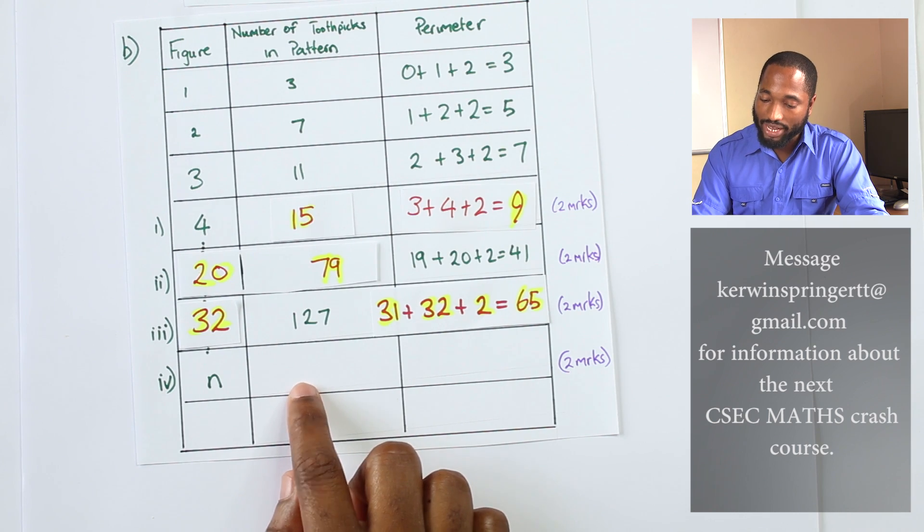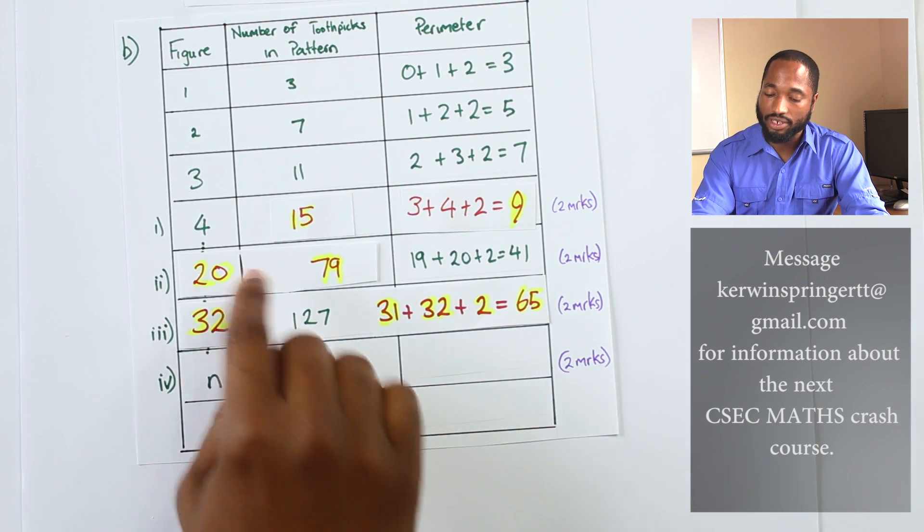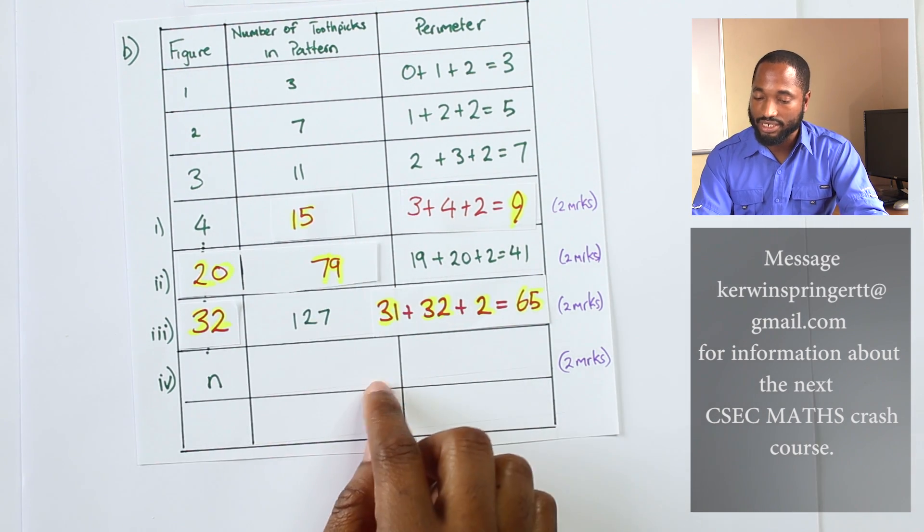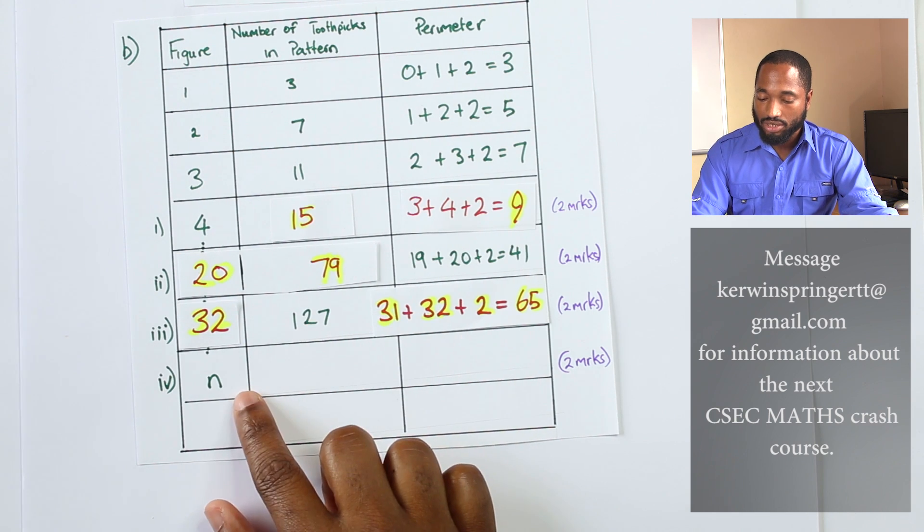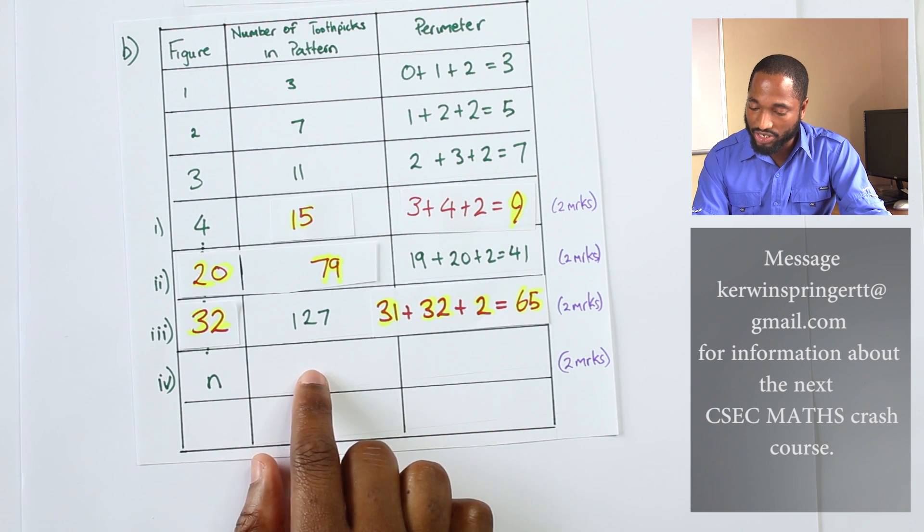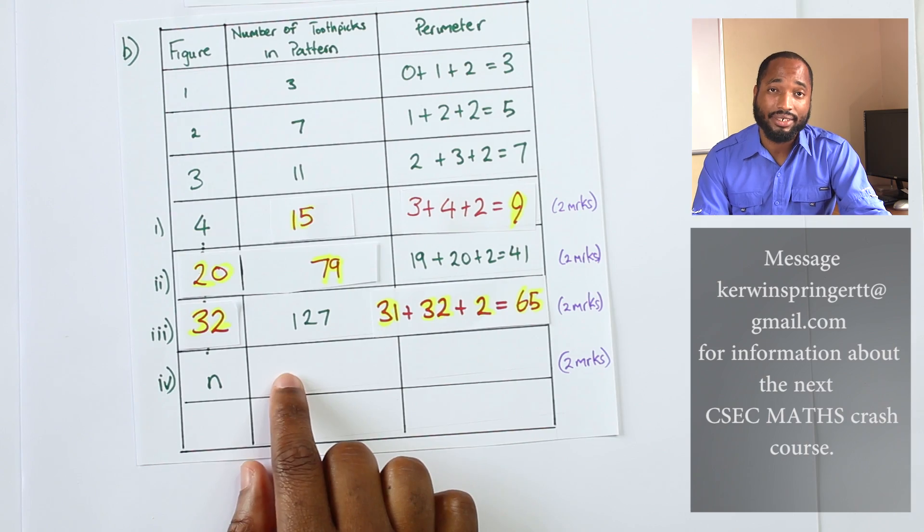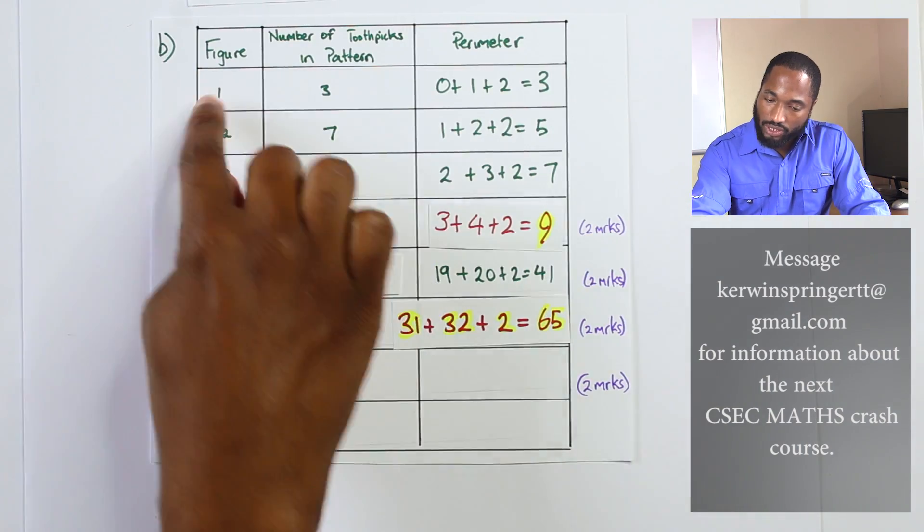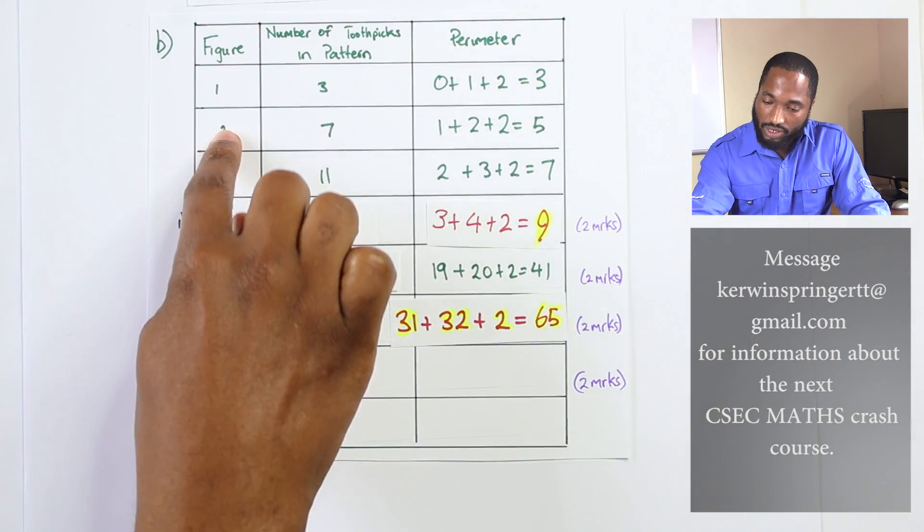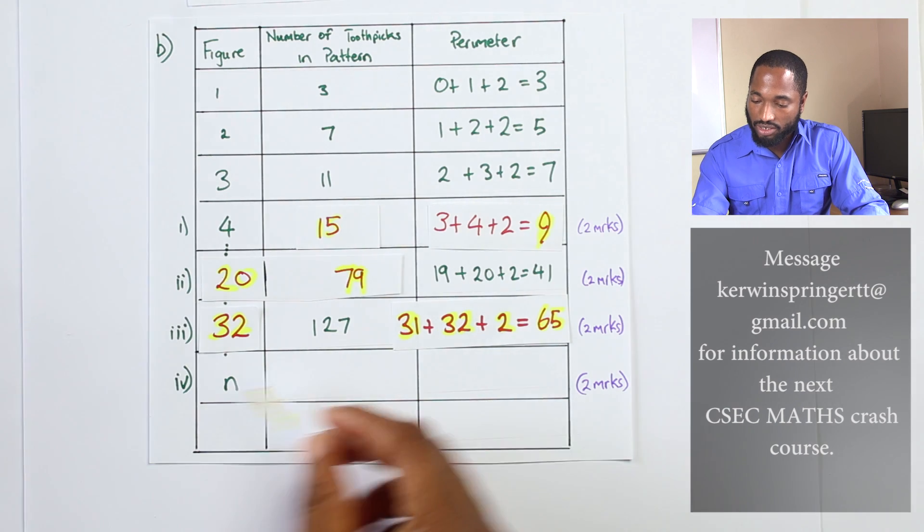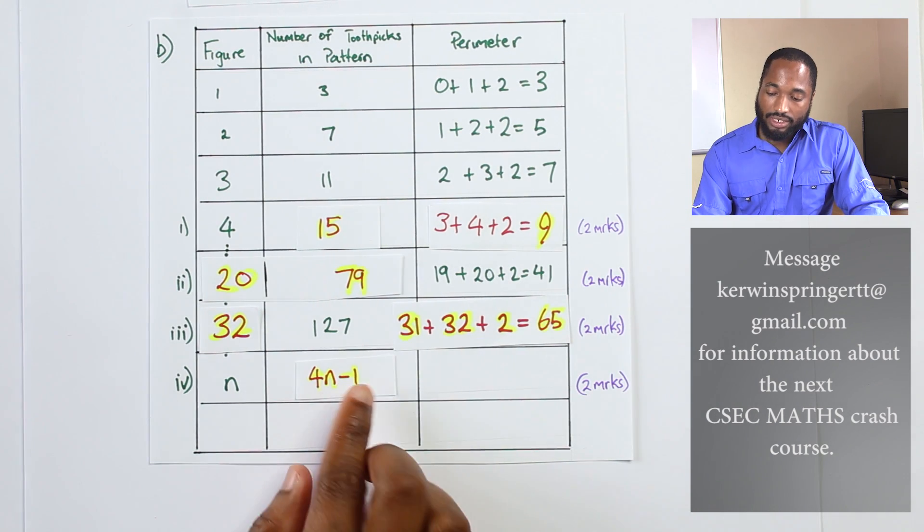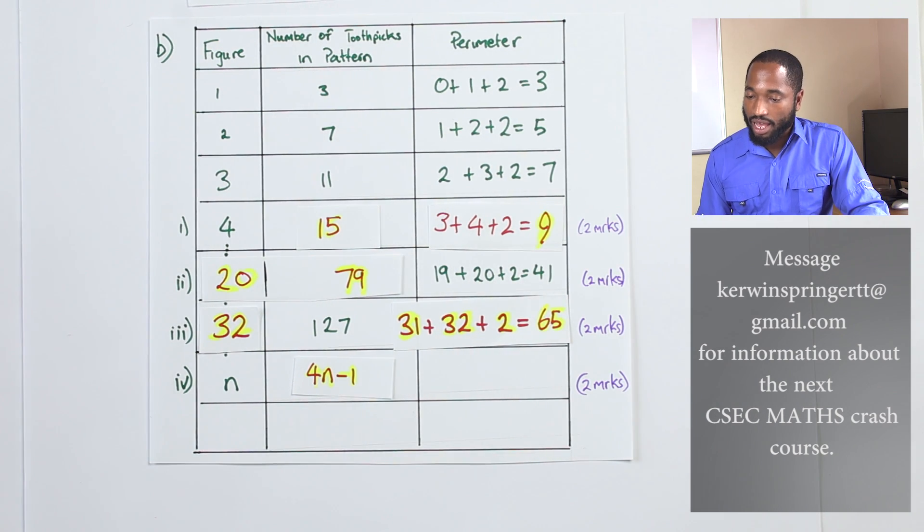This is where you actually use the formula that you're using all along to get these columns. So n, what is the relationship here? It's four times n take away one. Four times one take away one is three. Four times two, go ahead with that. So that is going to be 4n take away 1. Great. And the perimeter?